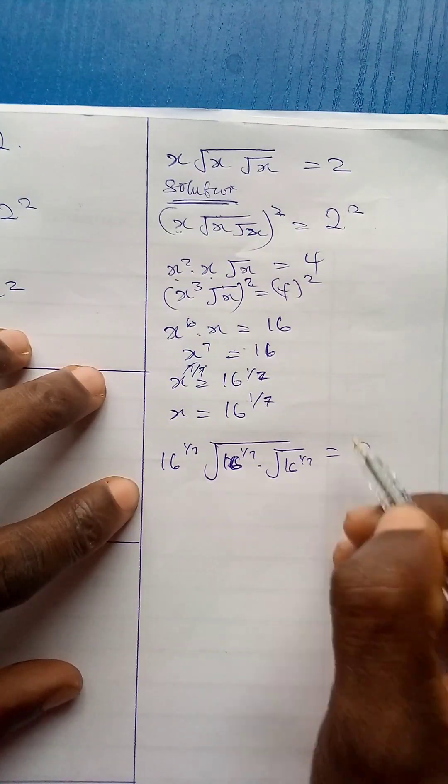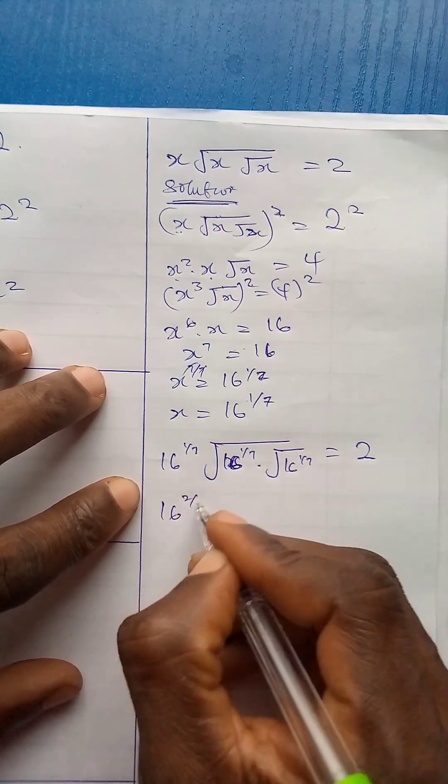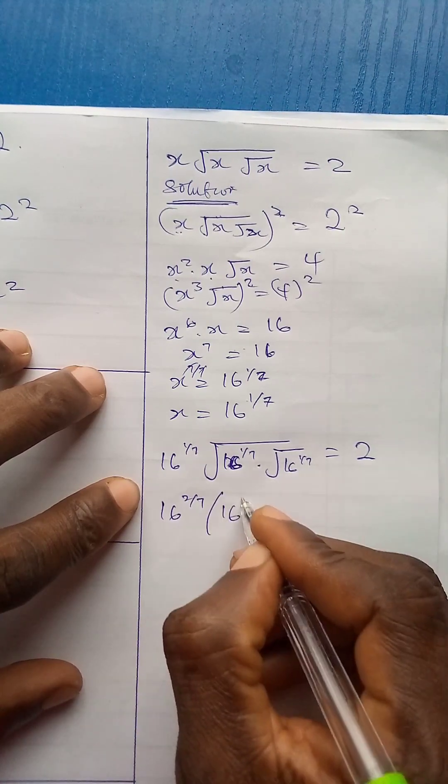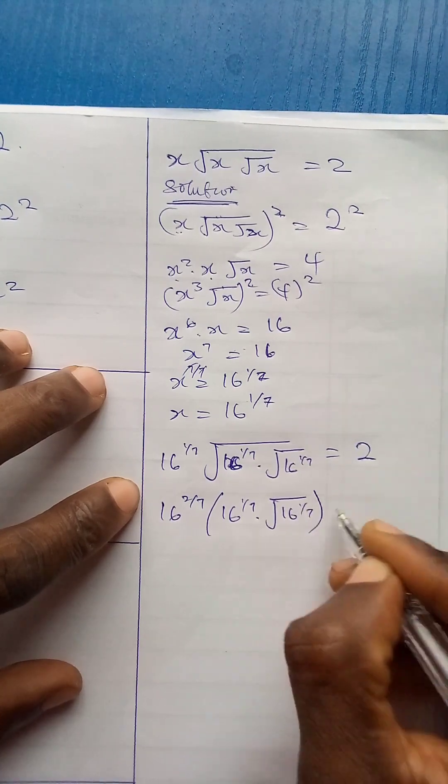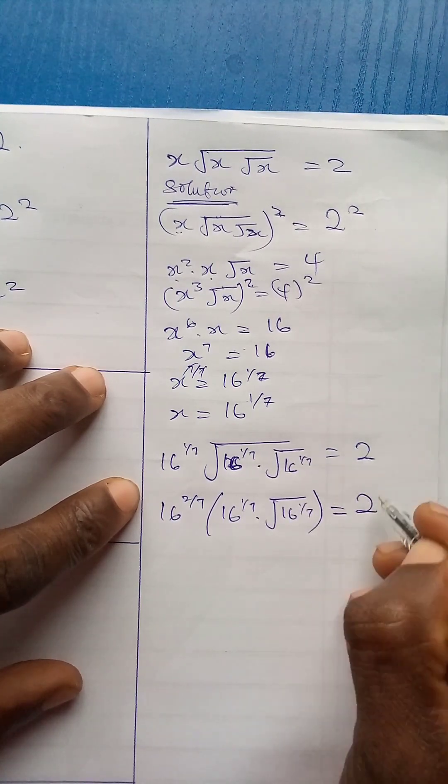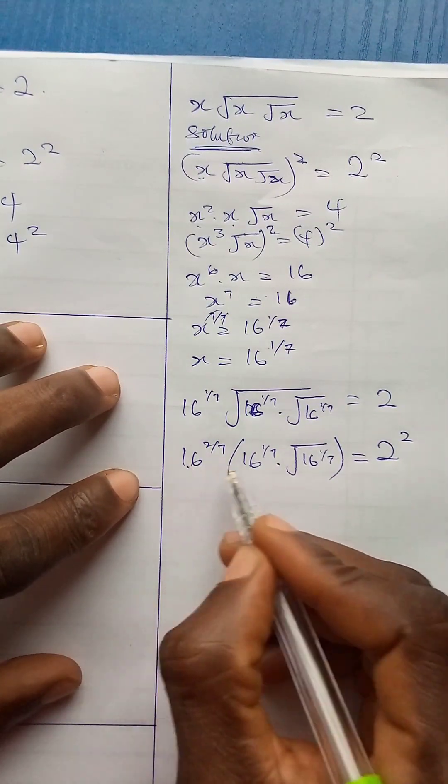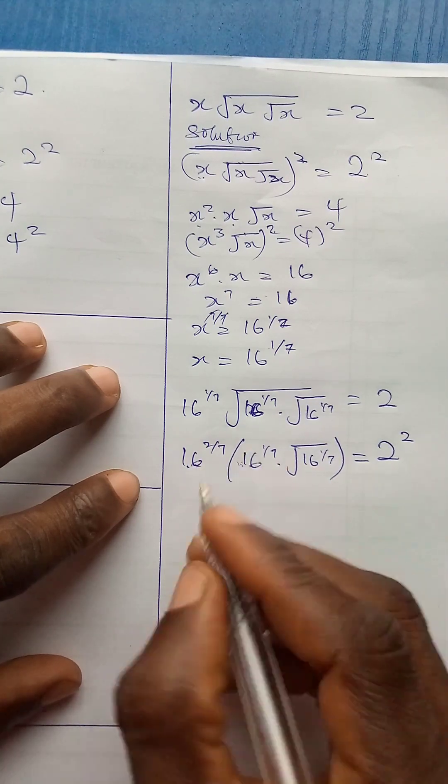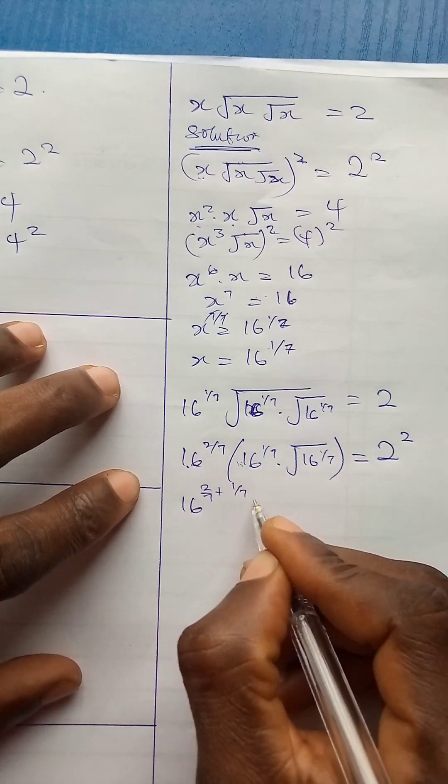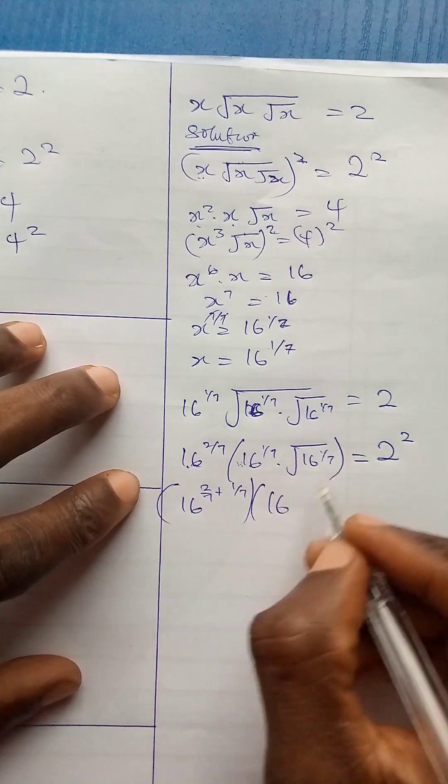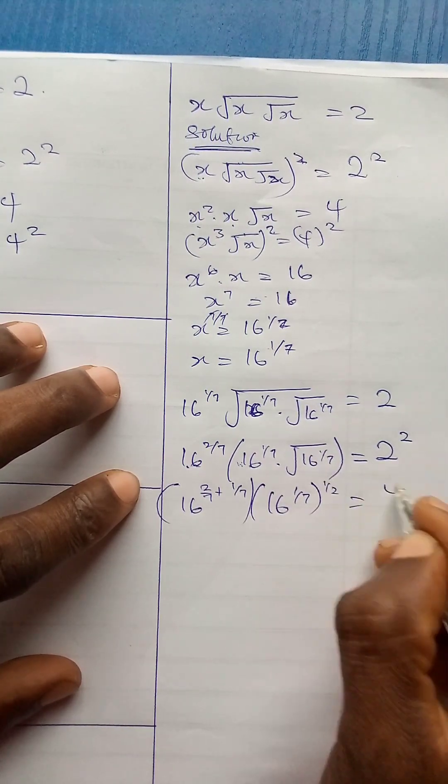I can do that by squaring both sides also. If I square both sides, I have 16 to power 2 over 7, times 16, 1 over 7, times square root 16, 1 over 7, is equal to 2 raised to power 2, which is 4. Now, if I apply addition law of indices, I have 16 to power 2 over 7, plus 1 over 7, times 16, 1 over 7. Now, this square root sign becomes 1 over 2, is equal to 4.